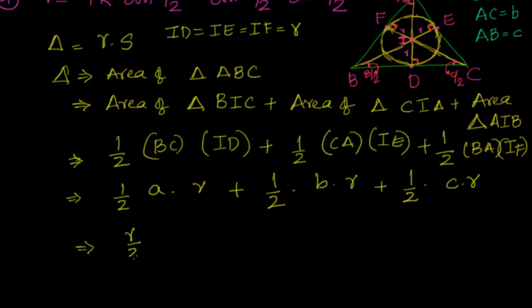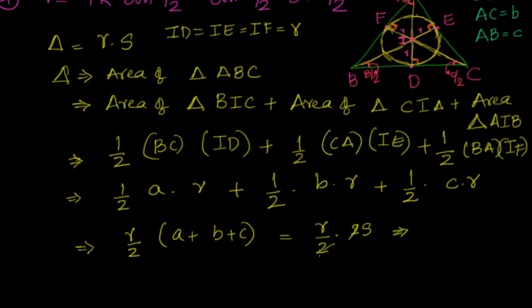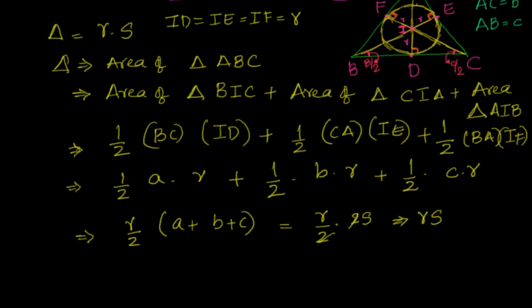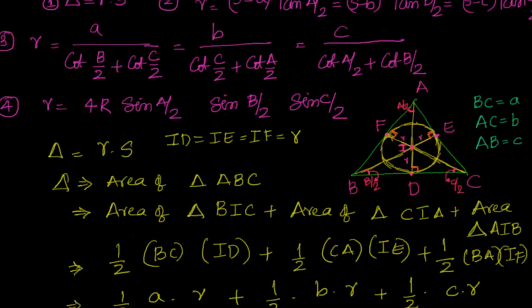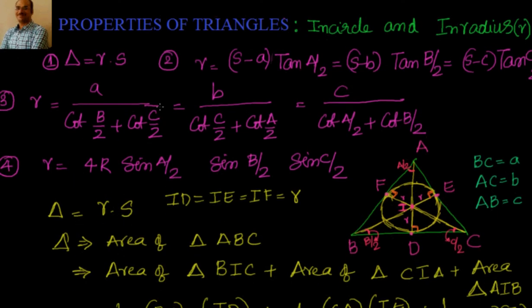Taking r/2 common, we have a plus b plus c, which is nothing but the perimeter of the triangle, equal to 2s. So the 2s cancels with the 2 in the denominator, giving delta equal to r·s. That's how we prove delta equal to r·s.